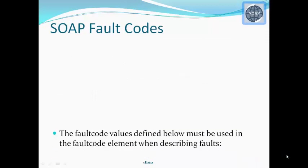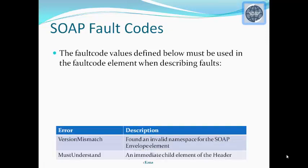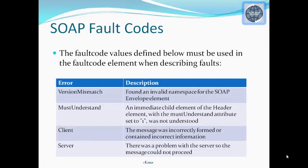SOAP fault codes must be used in the fault code element when describing faults. Version mismatch is used when an invalid namespace is found for the SOAP envelope. Must understand is used with the must understand attribute. Client error is used if the message is incorrectly formed or contains incorrect information. Server error is used when there is a problem with the server so the message cannot proceed.